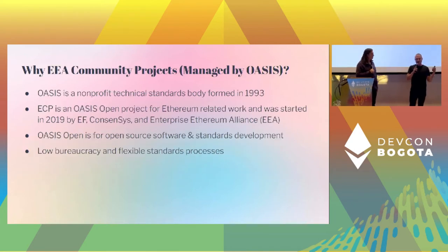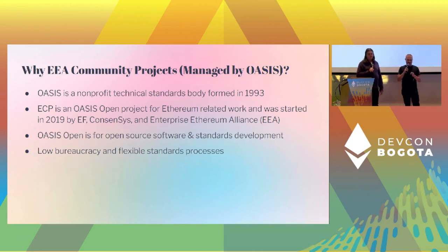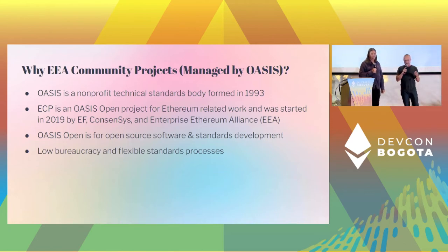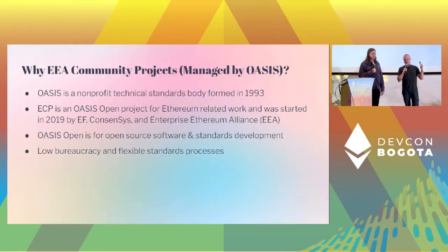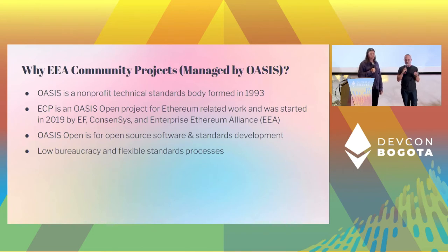Why are we doing this as an EEA community project managed by OASIS, and what does that mean? OASIS is a nonprofit technical standards body formed in 1993. They've done things like SGML, XML, and a lot of technical software standards, along the lines of IEEE, W3C, and IETF. The Ethereum Community Projects was formed three years ago as an OASIS open project, under the OASIS standards body's umbrella, by EEF consensus and the EEA.